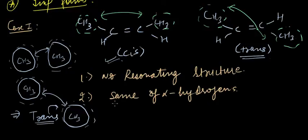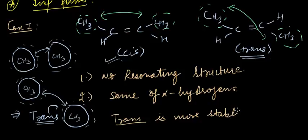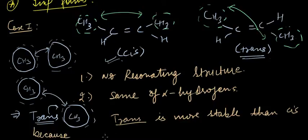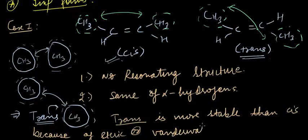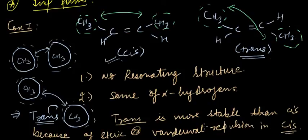Trans is more stable than cis because of steric — also called van der Waals — repulsion in the cis compound. When the two bulky groups are at diametrically opposite ends, there is less steric interaction compared to the cis arrangement.